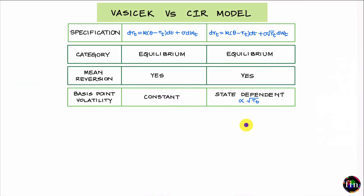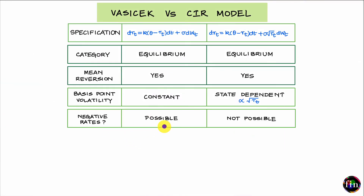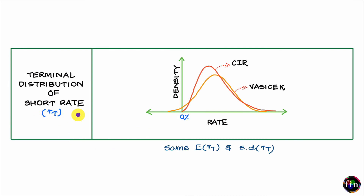To summarize this difference: in the Vasicek model negative rates are possible, whereas in the CIR model negative rates are not possible. Turning to the terminal distribution — the distribution of the short rate at some future time T — in the Vasicek model the distribution of RT is normal. The Vasicek model belongs to the class of Gaussian models, and the normal distribution itself implies a non-zero probability of the short rate falling below zero.